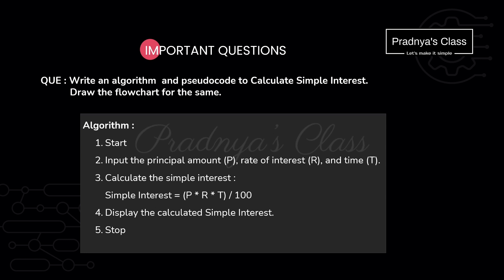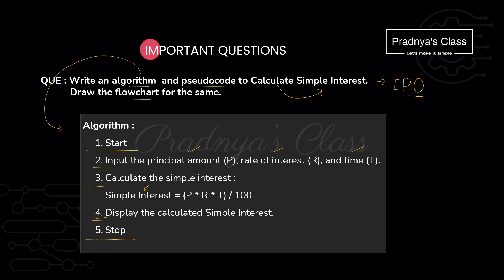Now let's work on examples. I have taken a simple example where we need to calculate simple interest. First, let's write the algorithm. The first step is always start and the last step is stop. For the second step — input — to calculate simple interest we need principal amount, rate of interest, and time. The next step is process: we calculate using the formula SI = PRT divided by 100. The final step is output — display the calculated simple interest. In this way we write the algorithm.